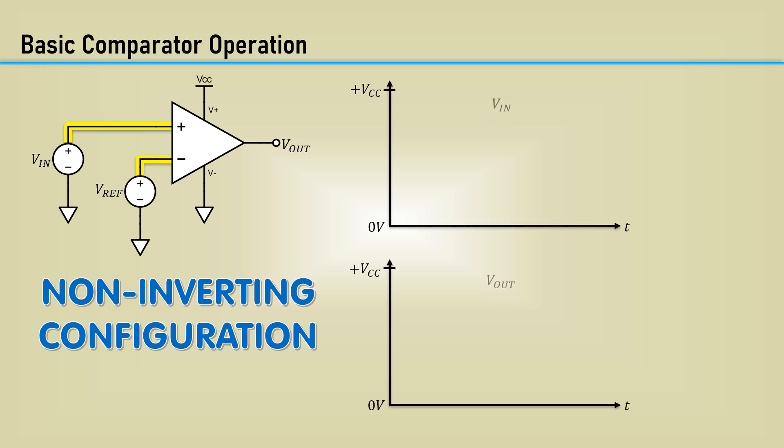Let's say the reference voltage is about midway between VCC and ground. Here is the input versus the output. When the input signal is higher than the reference, the output of the comparator goes high.